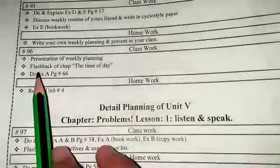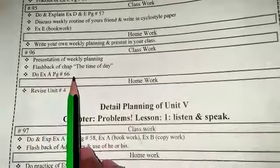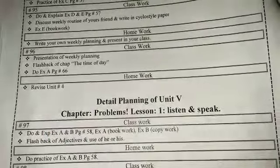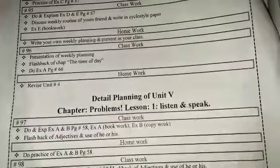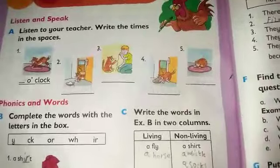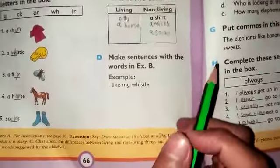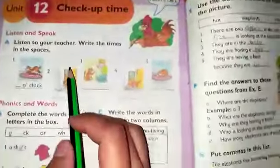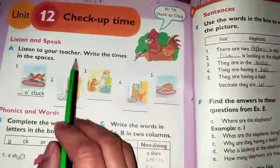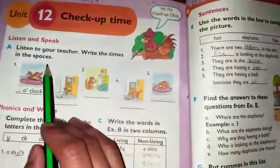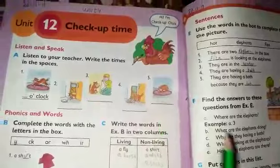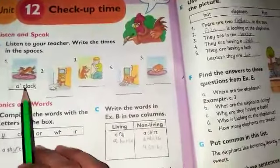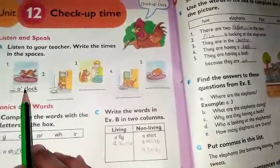Now do exercise A, page number 66. Open your book to page number 66. Listen to your teacher. Write the times in the space. I will tell you that you have time to write.